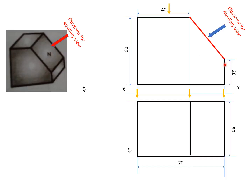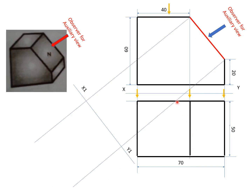For this, let us take an axis x1, y1 — that is, an imaginary plane which is parallel to this inclined surface. This x1, y1 is parallel to the inclined surface. We are drawing the auxiliary view, that is the view of this inclined surface. So x1, y1 is parallel to this inclined surface and is called the auxiliary plane. Now let us draw the projections which are exactly parallel to the direction of the observer, or perpendicular to the inclined surface.